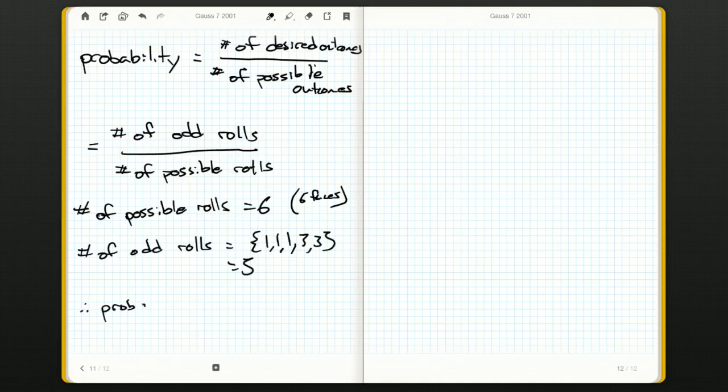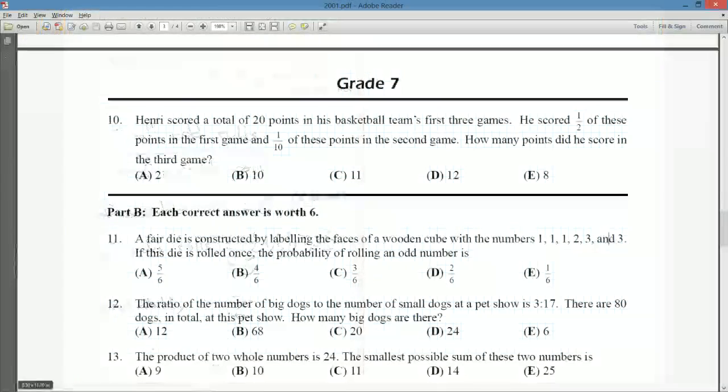So the probability is our desired outcome. How many of those are there? Well, how many odd faces do we have? We have five of them. How many possible rolls could we have? We have six different faces. So five out of six is our answer. That's what we're looking for, a probability of five out of six. And if we check, oh, that's the first one. So our answer should be A.